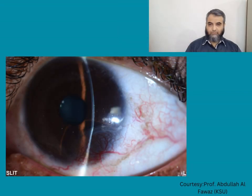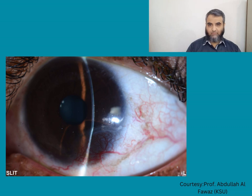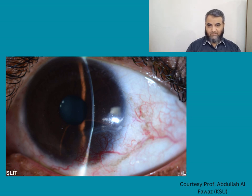This is a beautiful slide showing corneal neovascularization infratemporally. You can see the blood vessels coming in the form of efferents, making a loop, and then making afferents. Blood is coming and going from the cornea, occupying basically the infratemporal area of this eye.